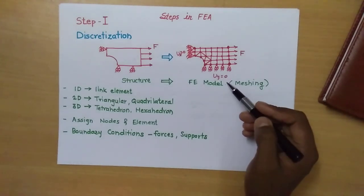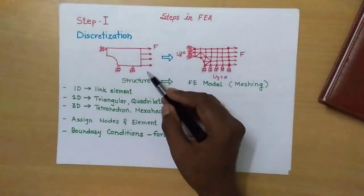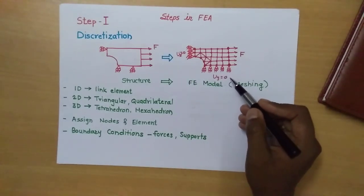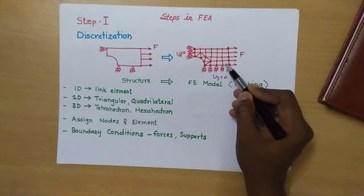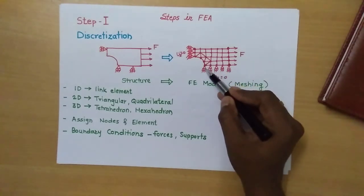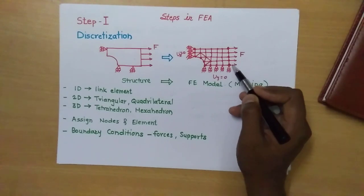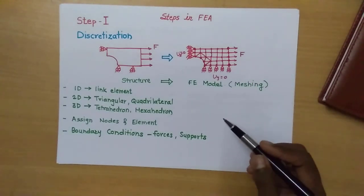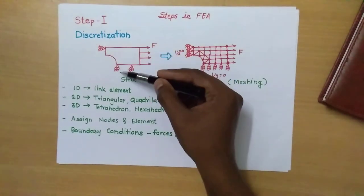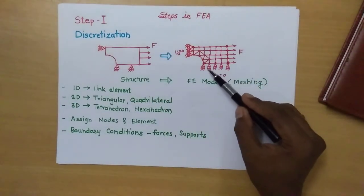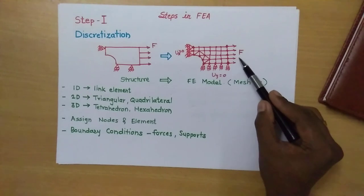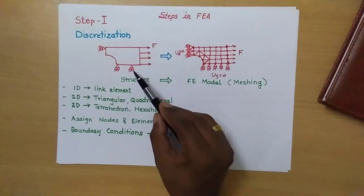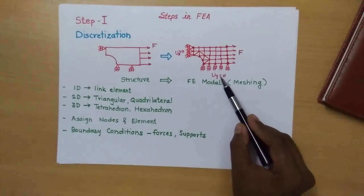For example, here we have defined a structure into a finite element model. We assign element numbers 1, 2, 3, 4, and so on, and then give node numbers accordingly. The next part of discretization is to define boundary conditions. Here we have fixed supports and roller supports, so for particular nodes we specify displacement as zero, and forces are applied on certain nodes. This is how we convert a structural problem into a finite element model — this is the first step, discretization.